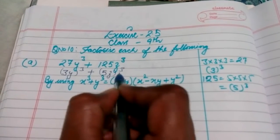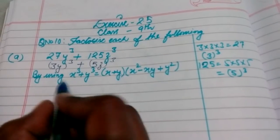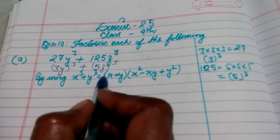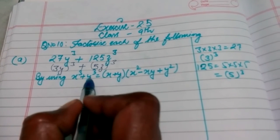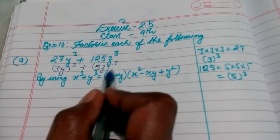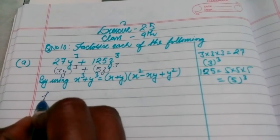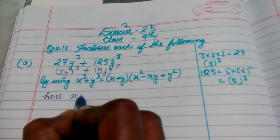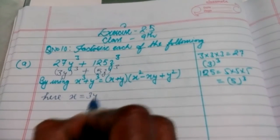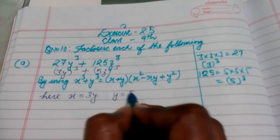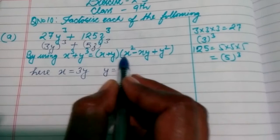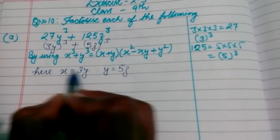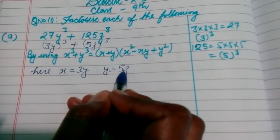Now just do the comparison. Here in place of x you can see there is 3y, and the cube is the same. In place of y you can see there is 5z. So we find that x = 3y and y = 5z. It's very simple. Now what you have to do is just put these values into the identity — in place of x put 3y, and in place of y write 5z.